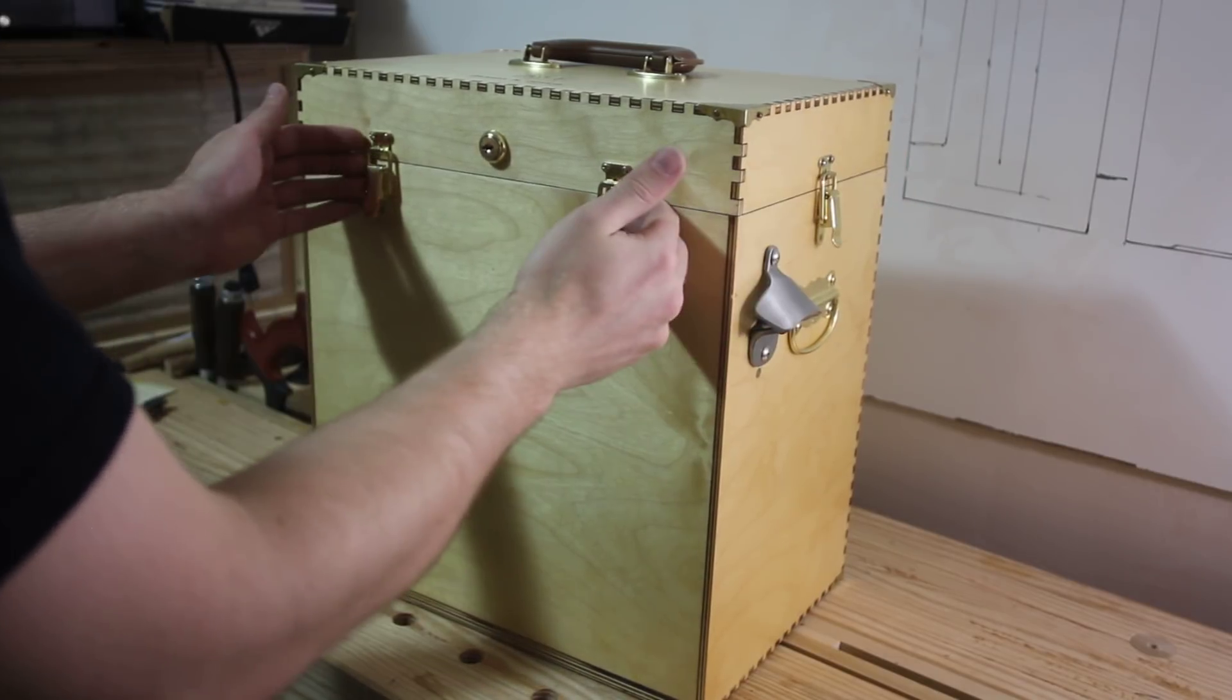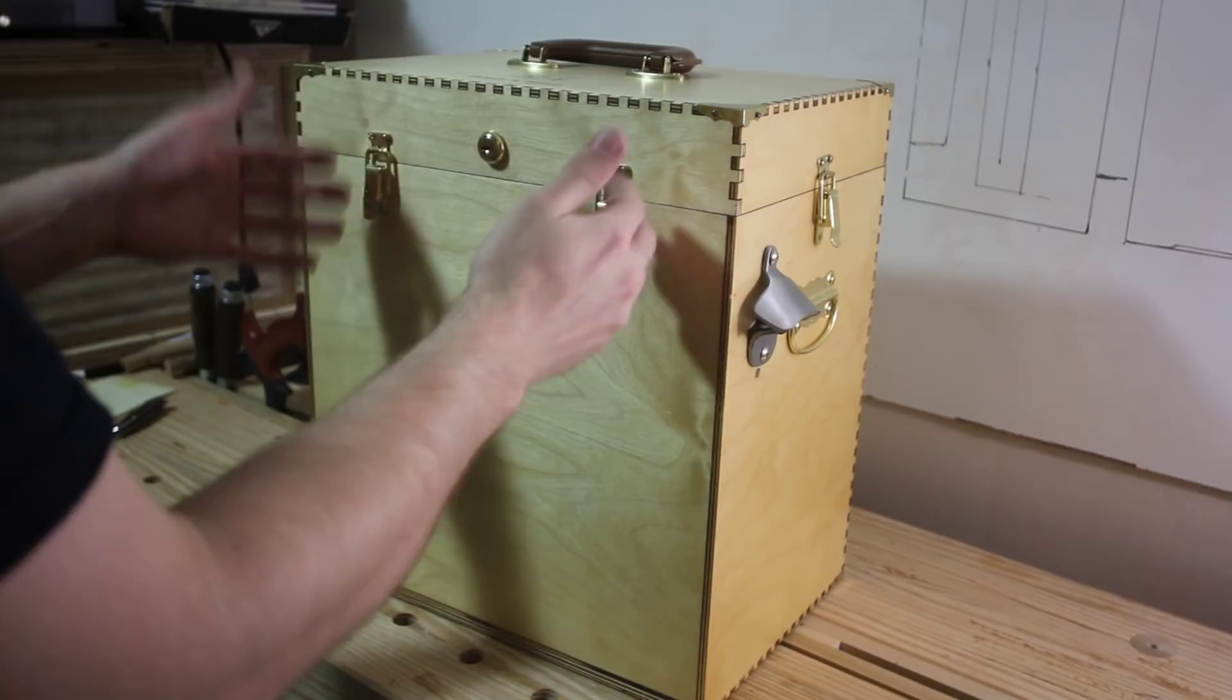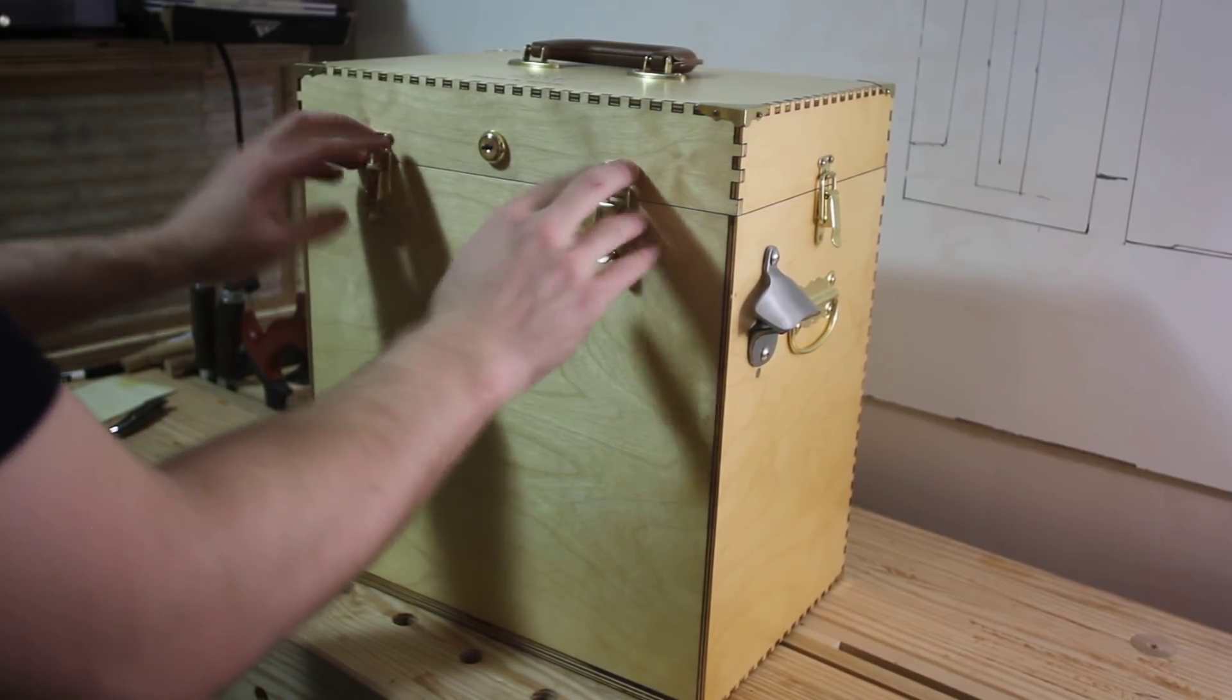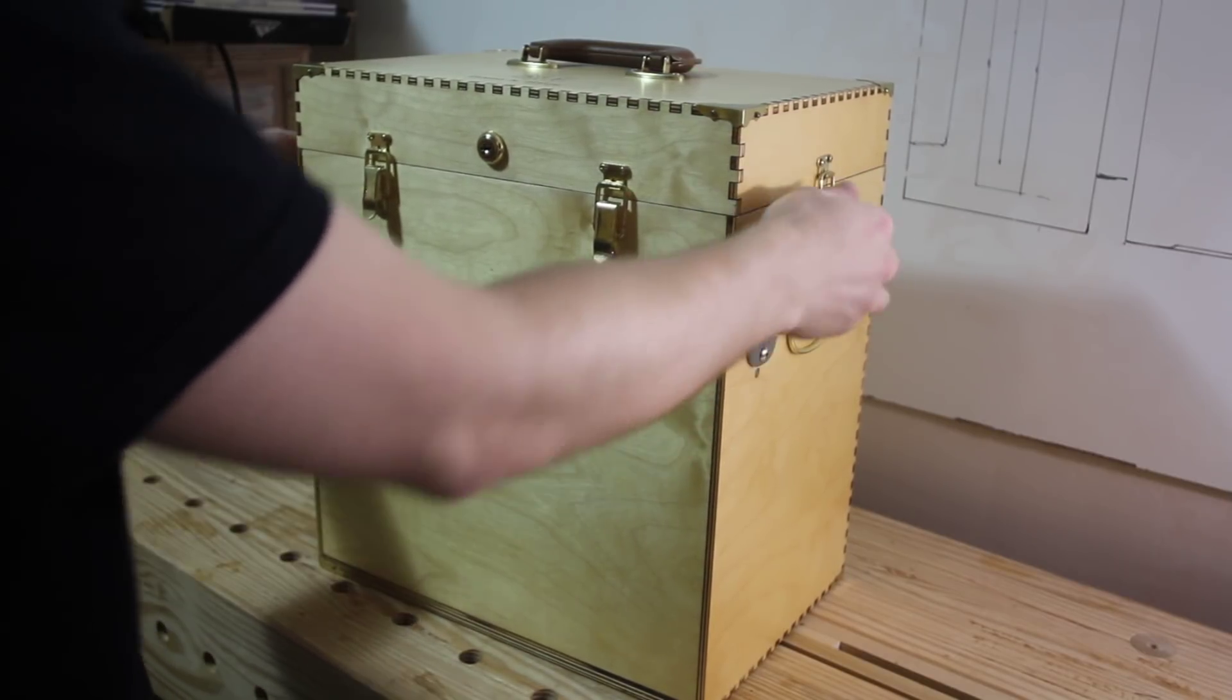So, there are four latches holding the lid in place. Now, in theory, we could probably get away with just the two latches on the front, but I also have the latches on the sides just for a little bit of extra security.